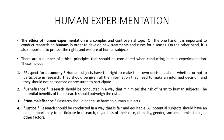There are a number of ethical principles that should be considered when conducting human experimentation. First is respect for autonomy — human subjects have the right to make their own decisions about whether or not to participate in research. They should be given all the information they need to make an informed decision and should not be coerced or pressurized to participate. Second is beneficence — research should be conducted in a way that minimizes the risk of harm, and the potential benefits should outweigh the risks. Next is non-maleficence — research should not cause any harm to human subjects. And last is justice — research should be conducted in a fair and equitable way, with all potential subjects having equal opportunity to participate regardless of their race, ethnicity, gender, or socioeconomic status.